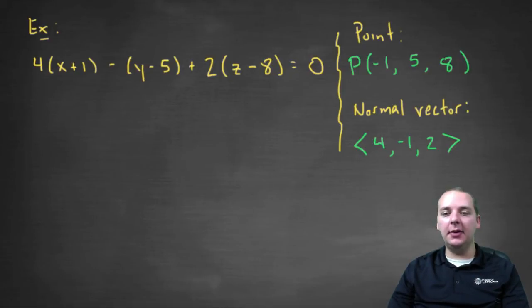Just for the heck of it, I mean we don't have any specific directions for this exercise, but just for the heck of it, let's also convert this guy quickly to general form, just because. So if you distributed the four, the negative one, and the two, you would get four X plus four, minus Y plus five, if you distribute the negative, and then plus two Z minus sixteen, equals zero.